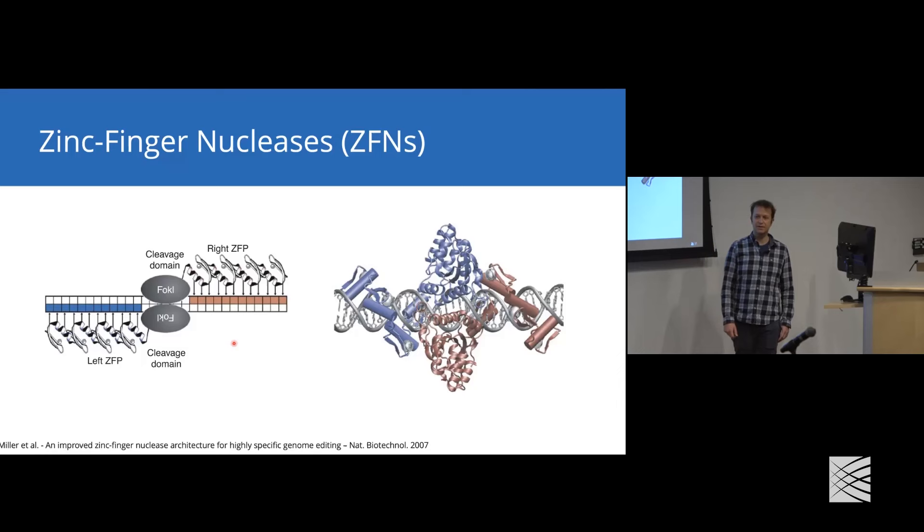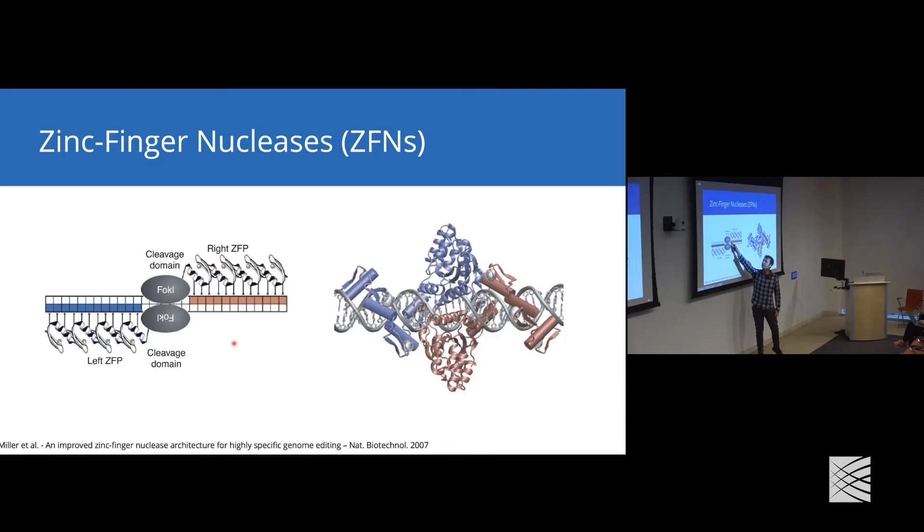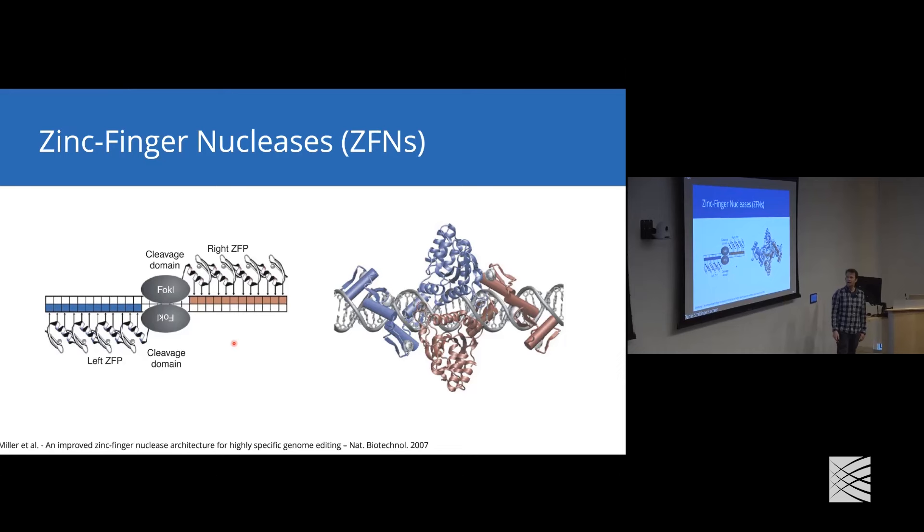This is a very long road of people trying to figure out how to use naturally occurring systems for genome engineering in human cells. It all started with zinc finger nucleases. Zinc fingers were initially identified as essential elements of eukaryotic transcription factors. As you can see in the schematic, a single zinc finger forms contacts with three base pairs in DNA.